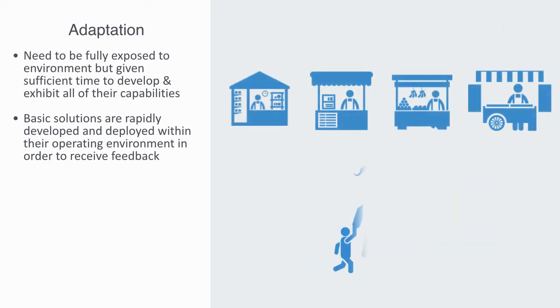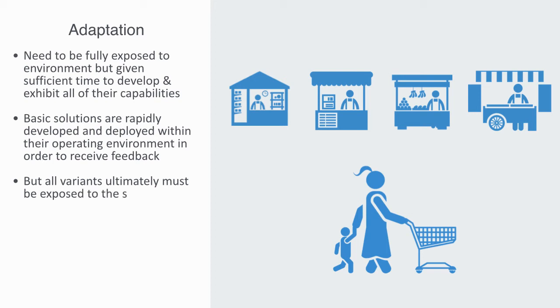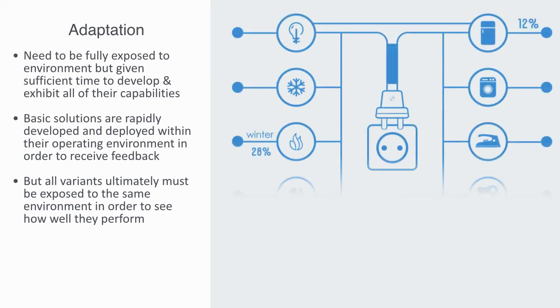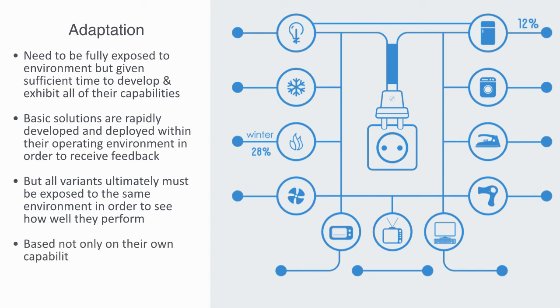But all of the variants ultimately must be exposed to the same environment in order to see how well they perform. Although the traditional narrative surrounding evolution is one of competition, a vision of everyone against everyone else, but this is only really true in very simple, relatively isolated environments. Most products, services, businesses, or individuals within advanced economies fail or succeed within that environment based not only on their own capabilities, but also on their capacity to interoperate and coordinate with other systems within environments of heightened interconnectivity. This capacity for interoperability is very important.